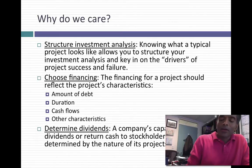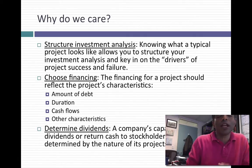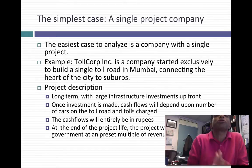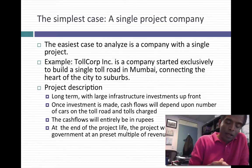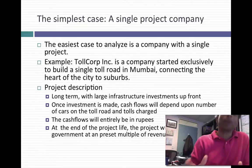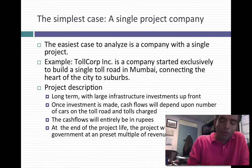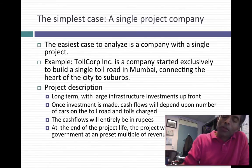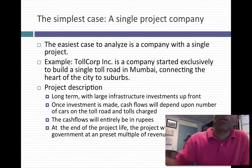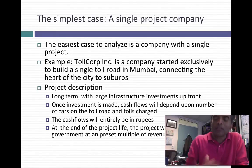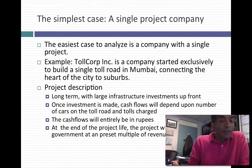With that background, let's look at easy to difficult companies in terms of identifying what a typical project looks like. The simplest case is a company that has a single project, and when the project ends, the company is over. For example, a company that's building a toll road in Mumbai — all they're going to do is build a toll road, run it commercially for 15 to 20 years, and at the end, sell it back to the Indian government at a pre-specified price.